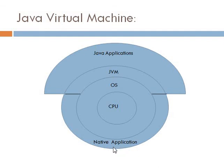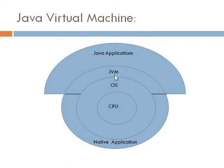However, native applications written using other programming languages such as C and C++ run directly on the operating system. Note that Java is platform independent, not JVM. So JVM is not platform independent — only Java is platform independent. There is a separate JVM for each operating system. In general, we do not need to install JVM separately; it accompanies the operating system.